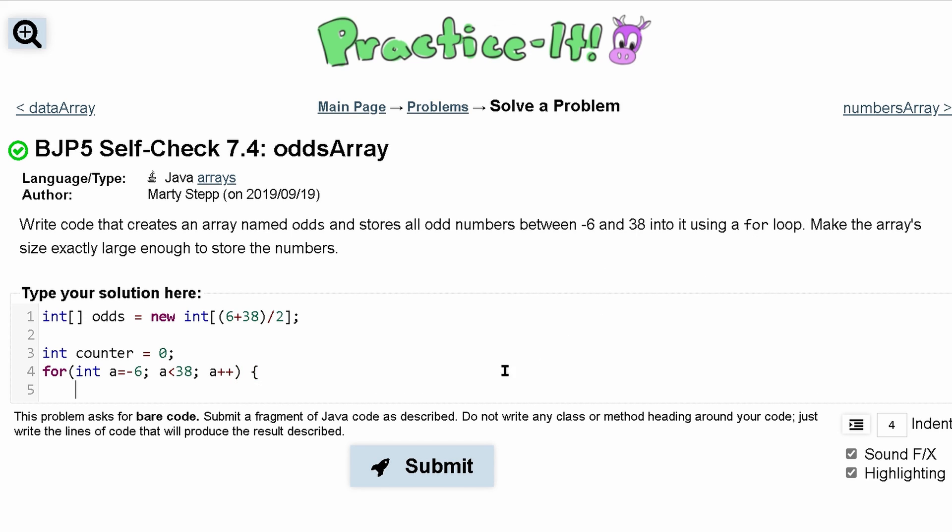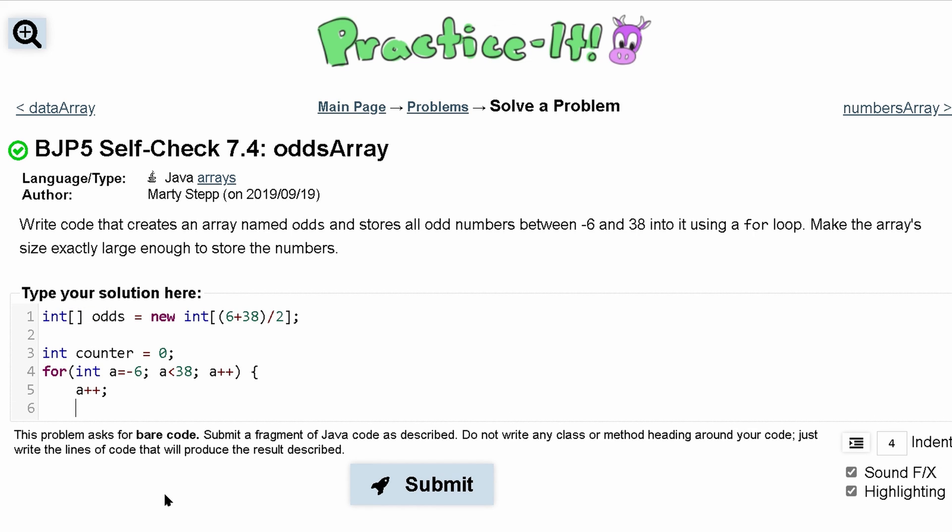Because we only want the odd numbers, we're not just going to increment this every single time, we're going to increment it twice every single time. So the first time we look at this, a is equal to negative 6, and we want to store it into our array. We can't have it at negative 6, so we have to do a plus plus. Now, a is equal to negative 5. Let's store that in here.